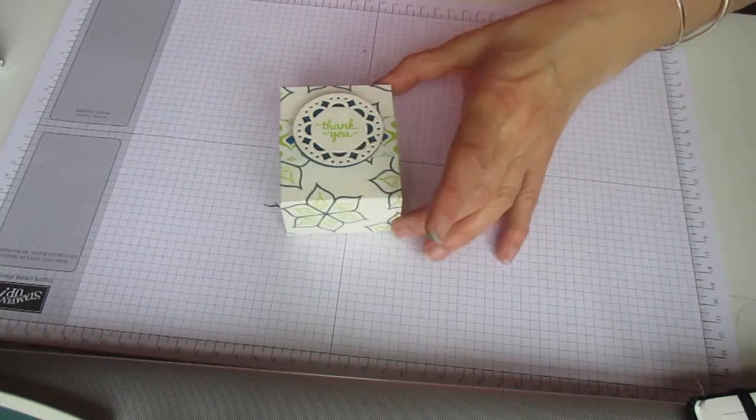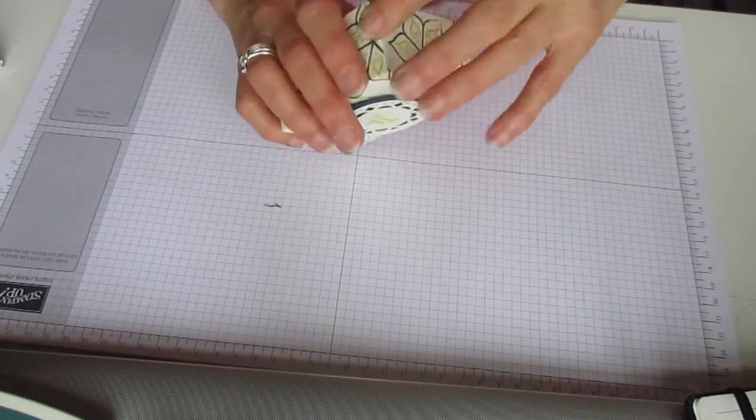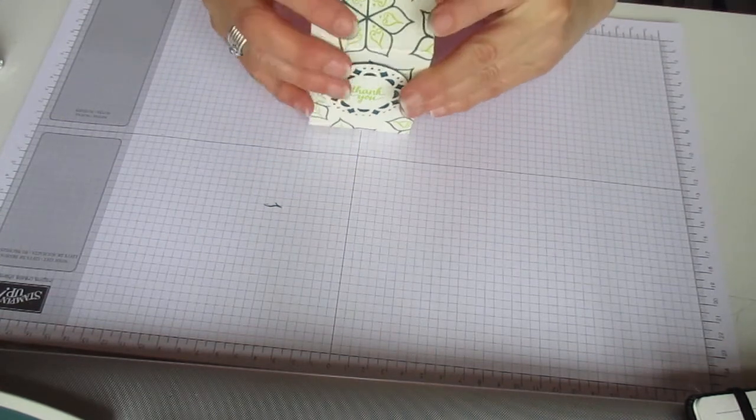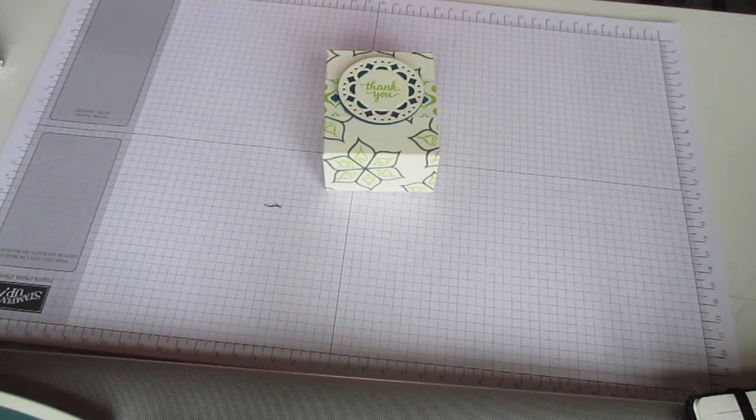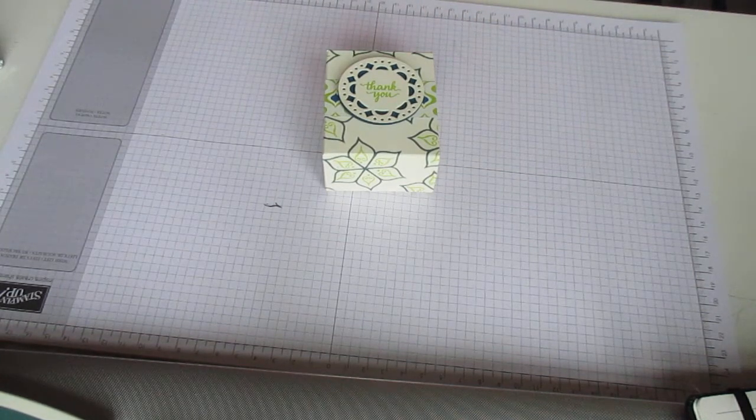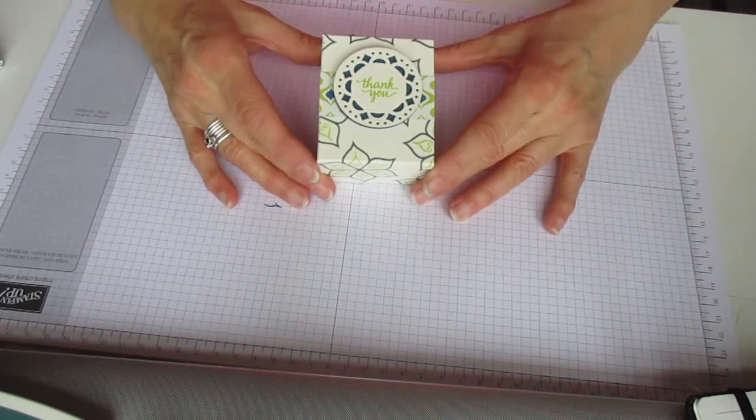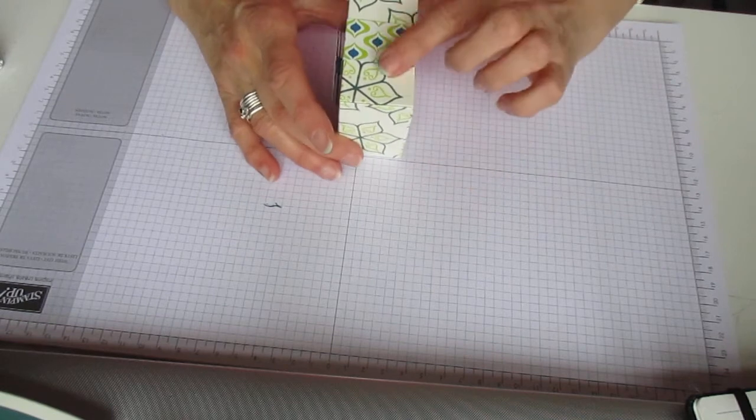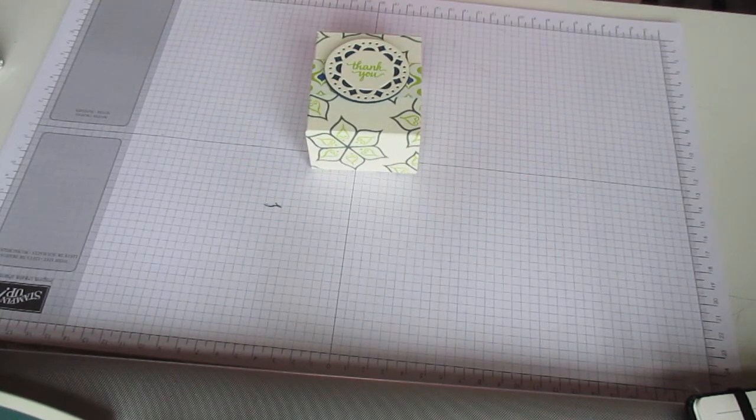This is a little box I've made. It's sealed at one end and just opens at the other. I've used the thick Whisper Very Vanilla cardstock, which is new in the catalogue coming out. I've used some of the designer series paper which comes with the Eastern Palace Suite, and this is one of the dies that I've used.